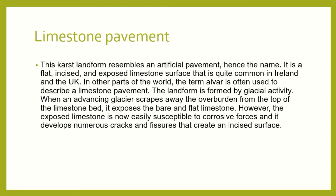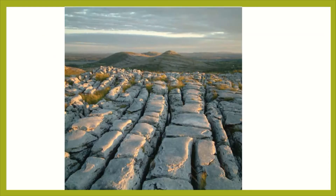Limestone pavement — this karst landform resembles an artificial pavement, hence the name. It is a flat, exposed limestone surface that is quite common in Ireland and the UK. In other parts of the world, the term 'alvar' is often used. This type of landform is formed by glacial activity. When an advancing glacier scrapes away the overburden from the top of the limestone bed, it exposes the bare and planed limestone. The exposed limestone then becomes easily susceptible to corrosive forces, developing various types of cracks and fissures, resulting in limestone pavement.